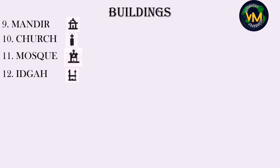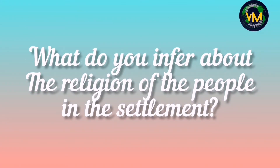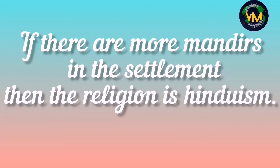Numbers nine, ten, eleven and twelve are places of worship: mandir (temple), church, mosque, and idga. The most commonly used symbol in topographical maps is mandir. A question may be asked: what do you infer about the religion of the people in a particular settlement? If you see many mandirs, your answer should be Hinduism.